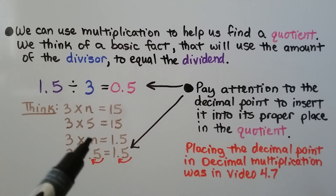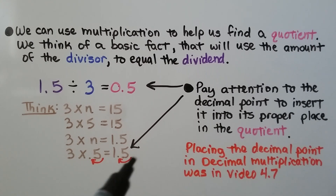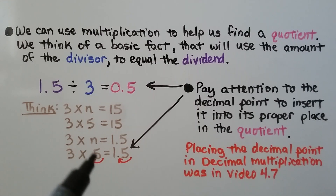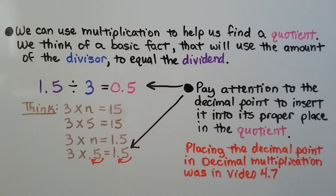We think: three times some number n equals one and five tenths. There is one decimal hop in this product, so there must be one decimal hop in the factors. The three is a whole number with no decimals, so the decimal hop must be in n — it must have one decimal hop. We know one and five tenths divided by three is equal to five tenths. The placing of the decimal point in decimal multiplication was covered in video 4.7, linked in the description.